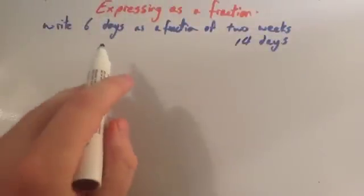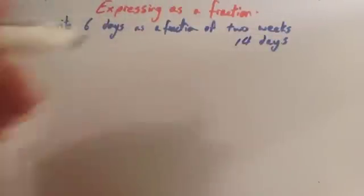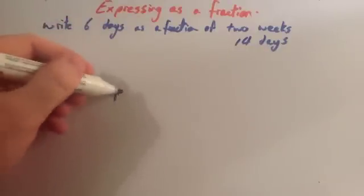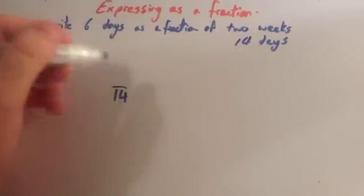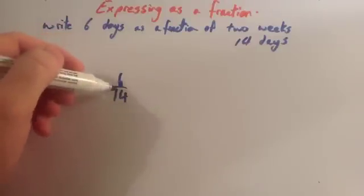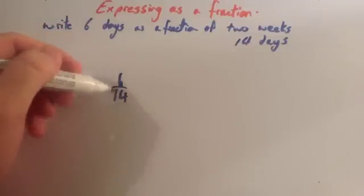So we want to write 6 days as a fraction of 12 days. Or, sorry, 14 days. So, it's out of 14 days, and it's 6 days out of it. So it's 6 over 14. 6 fourteenths.